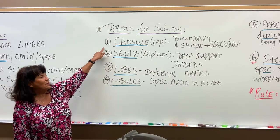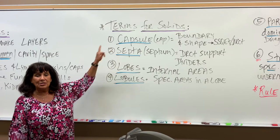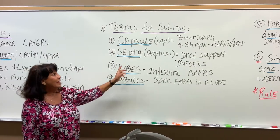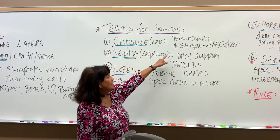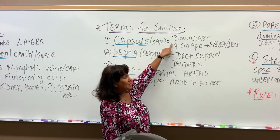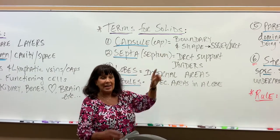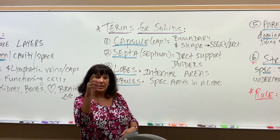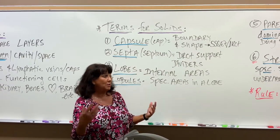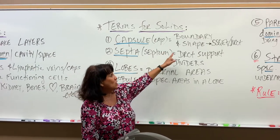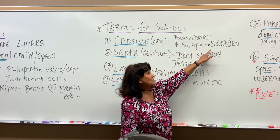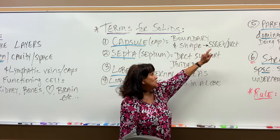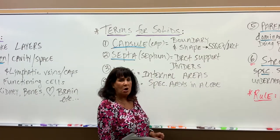Every solid organ will have a capsule around the outside. The capsule is the outside boundary — it's going to give it its shape, like a heart shape, a kidney shape, a bone shape. It's always made out of simple squamous epithelium and dense regular connective tissue, always.